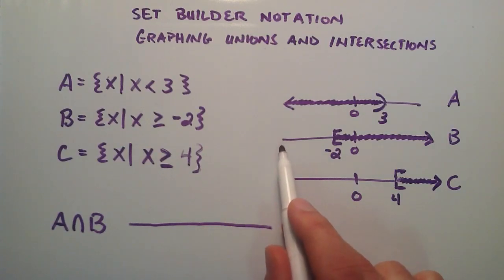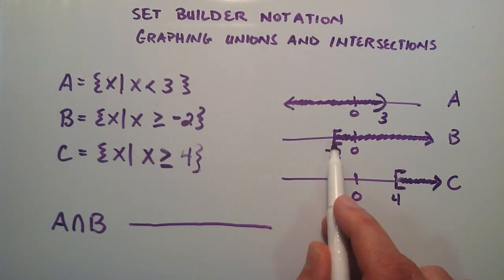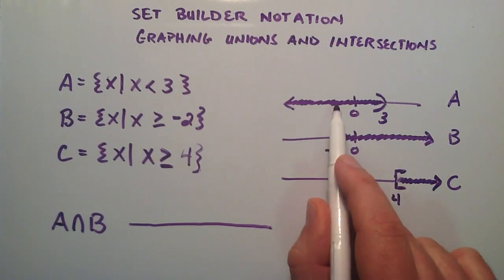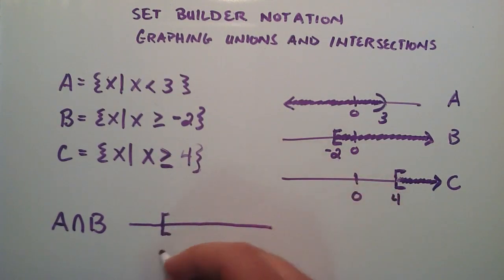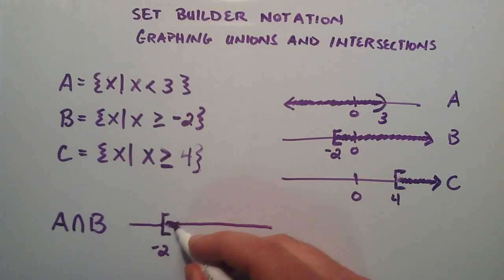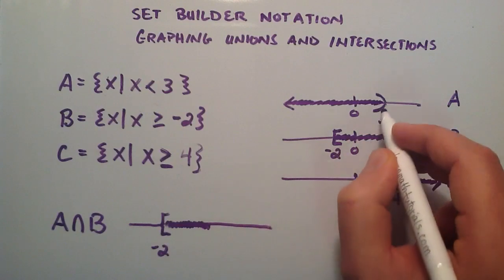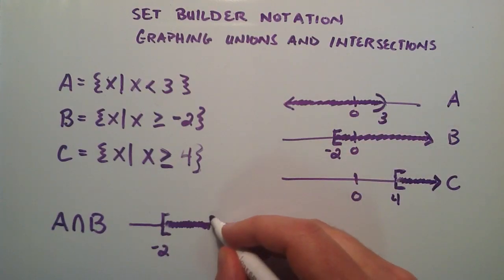We're basically wanting to represent all the elements that A and B have in common. B doesn't have any elements up until negative 2, and negative 2 is included in A, so we can use that as our starting point. We put the bracket here at negative 2, and then we just shade in all the values that are in both A and B.